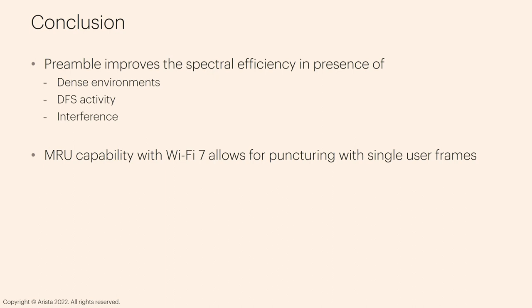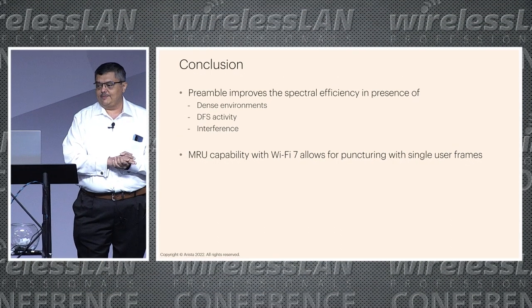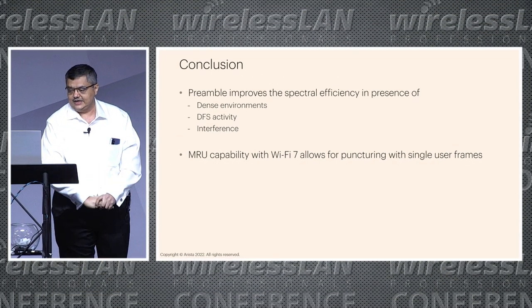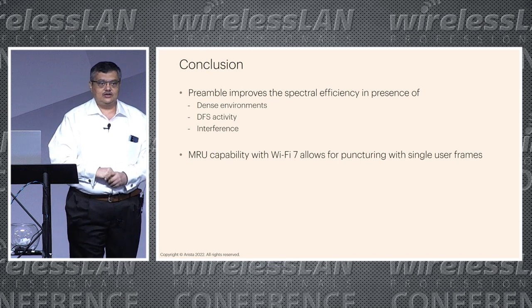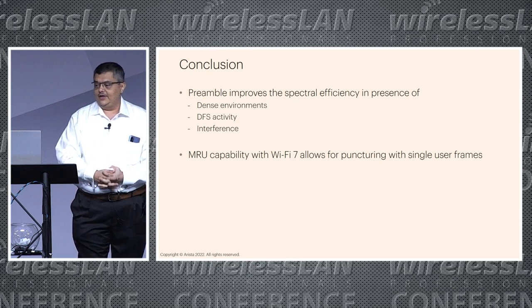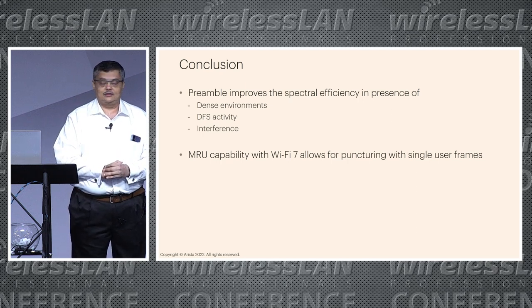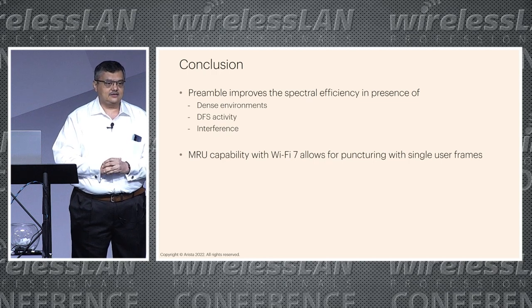In conclusion, preamble puncturing improves spectral efficiency in the presence of dense environments, DFS activity, and interference, so you can make better use of your available channel. And with the MRU capability of Wi-Fi 7, preamble puncturing for single user frames is now possible, which was not possible in Wi-Fi 6. That's my time — thank you.